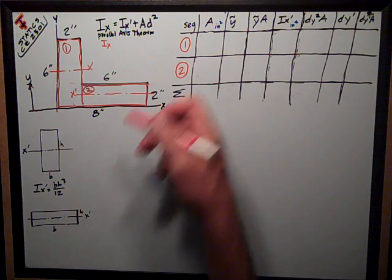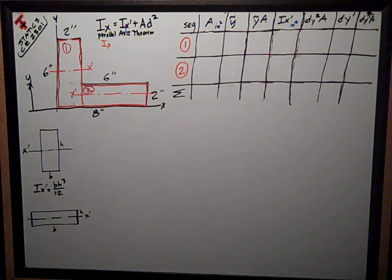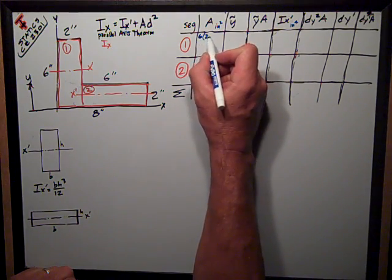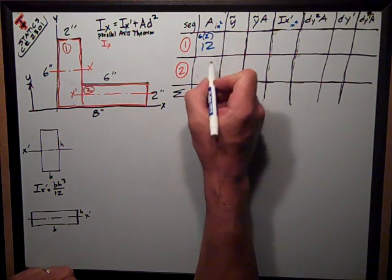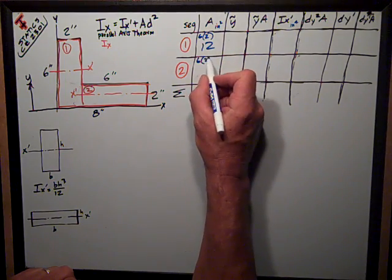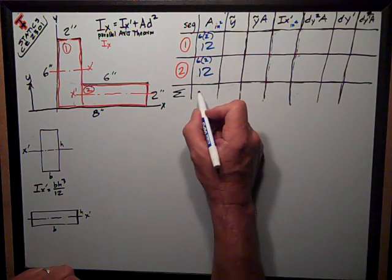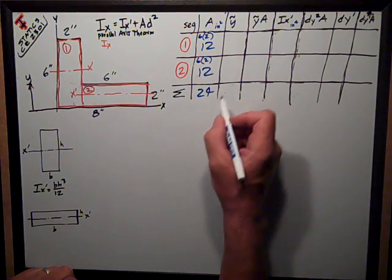Got the two segments, compute the area of each one. The area of segment 1 is obviously 6 by 2, or 12. Same thing for the area of segment 2, 6 by 2, 12. I can sum those while I'm at it, 24 inches squared.